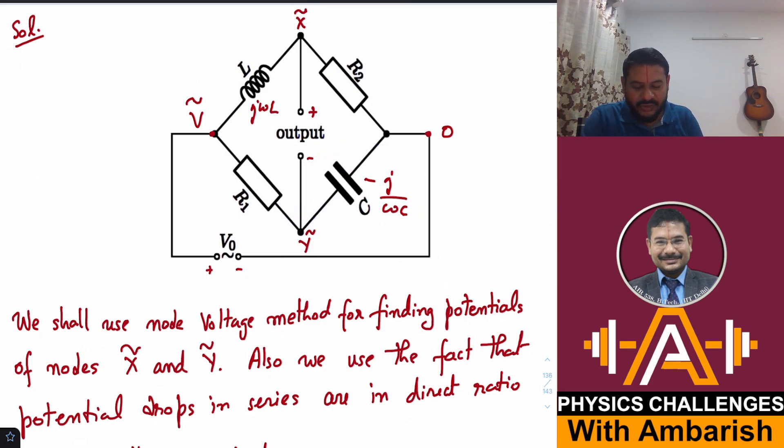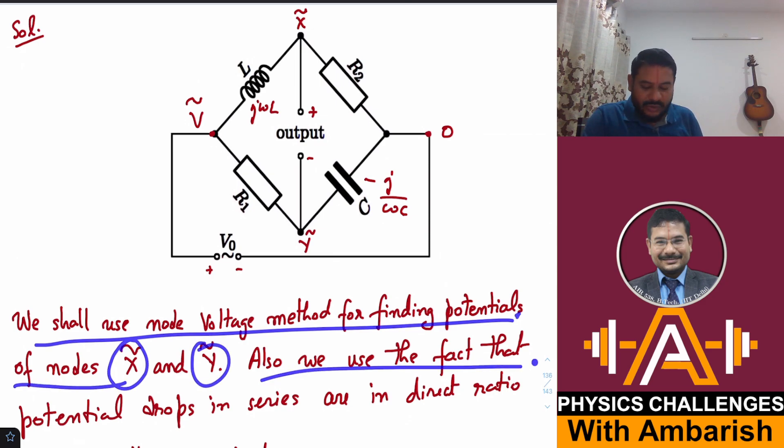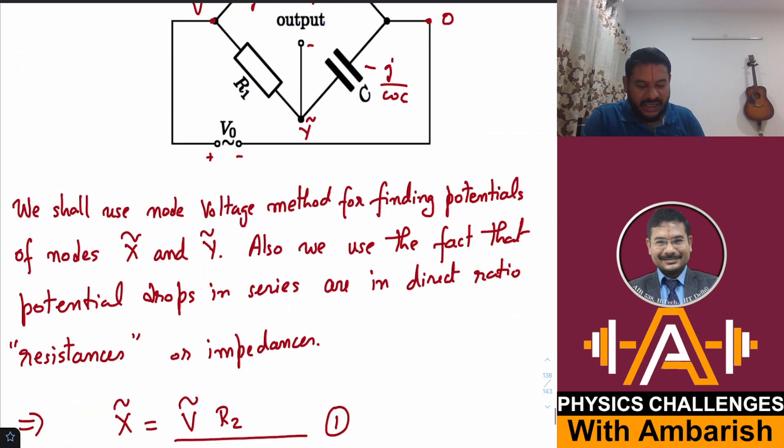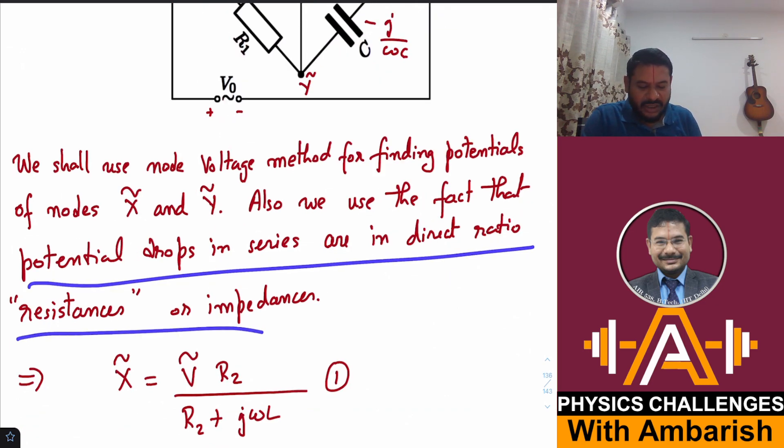We divide the potential drop V minus 0 in the ratio of jωL to R2, and X tilde is then simply the potential drop across R2. Similarly Y tilde is the potential drop across this capacitor. We shall use node voltage method for finding potentials of nodes X and Y. Also we use the fact that potential drops in series are in direct ratio of resistances or impedances.